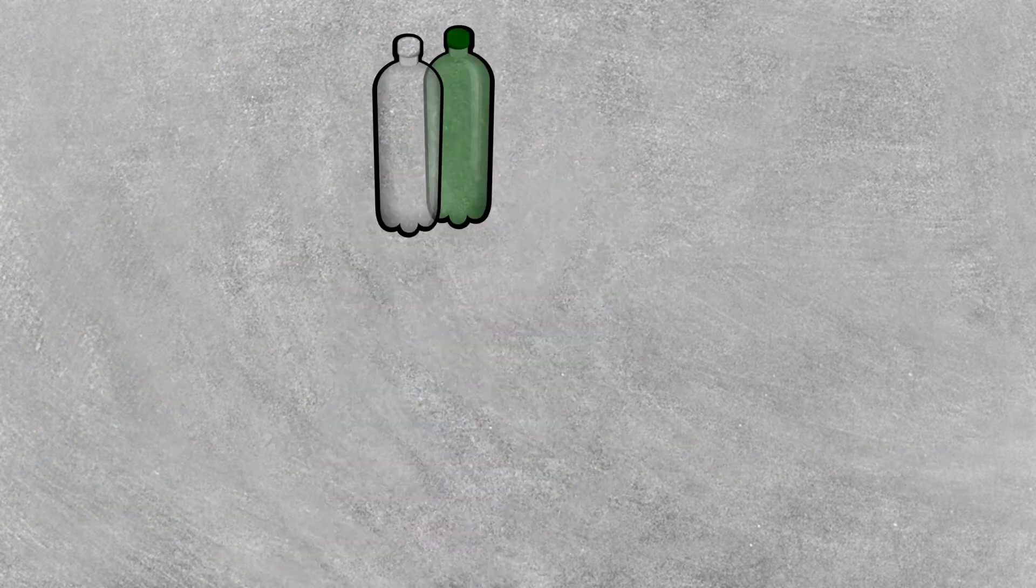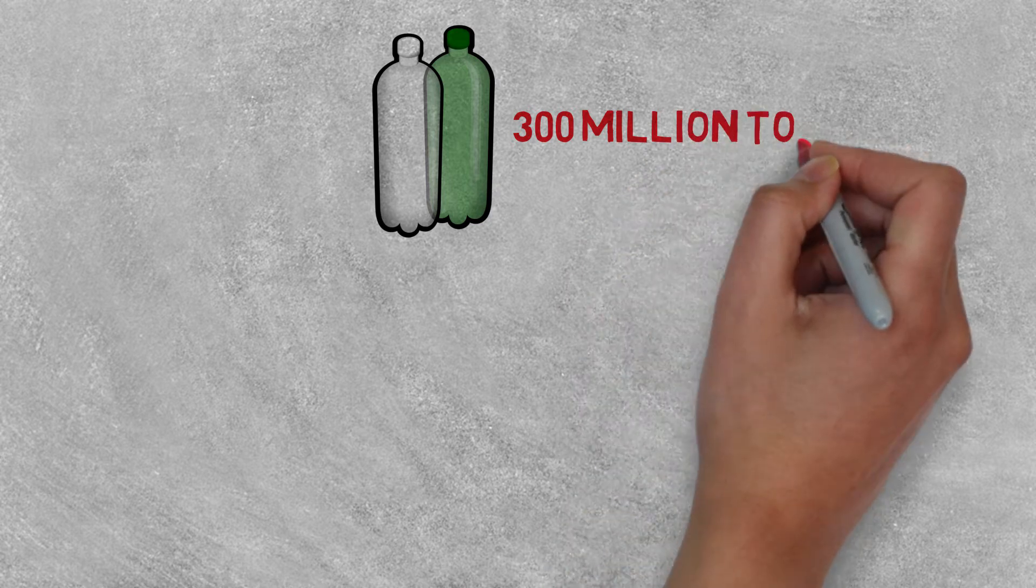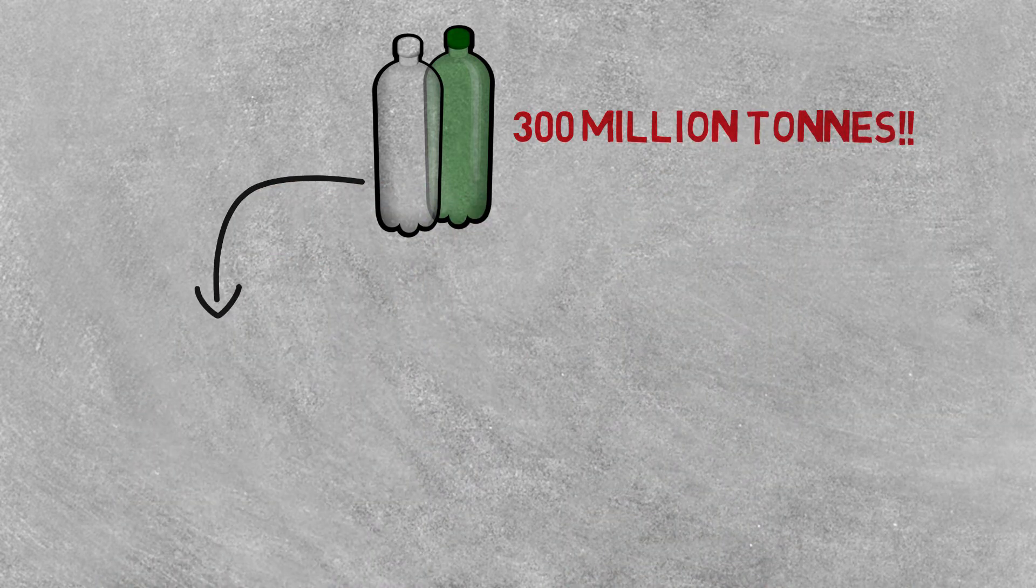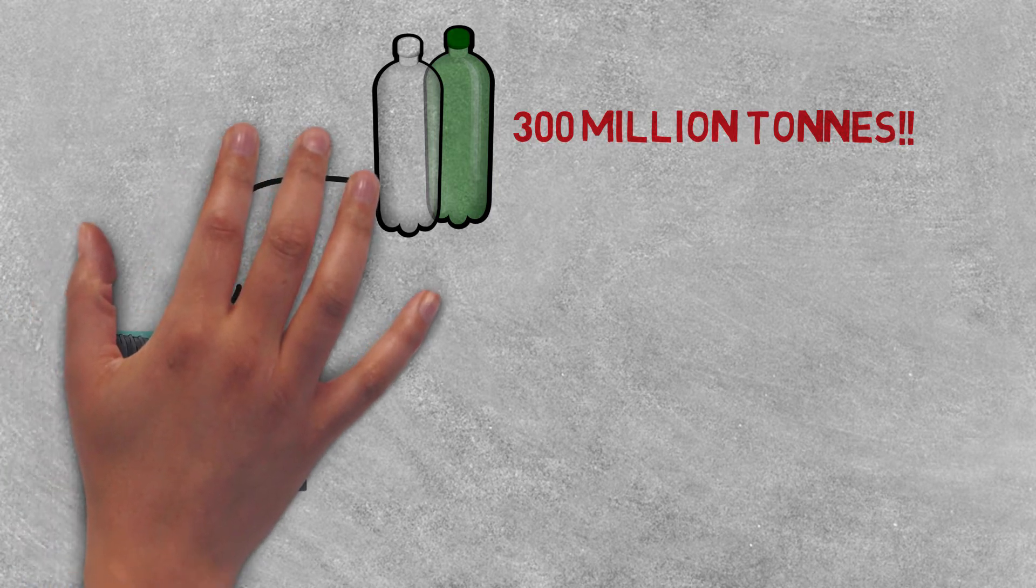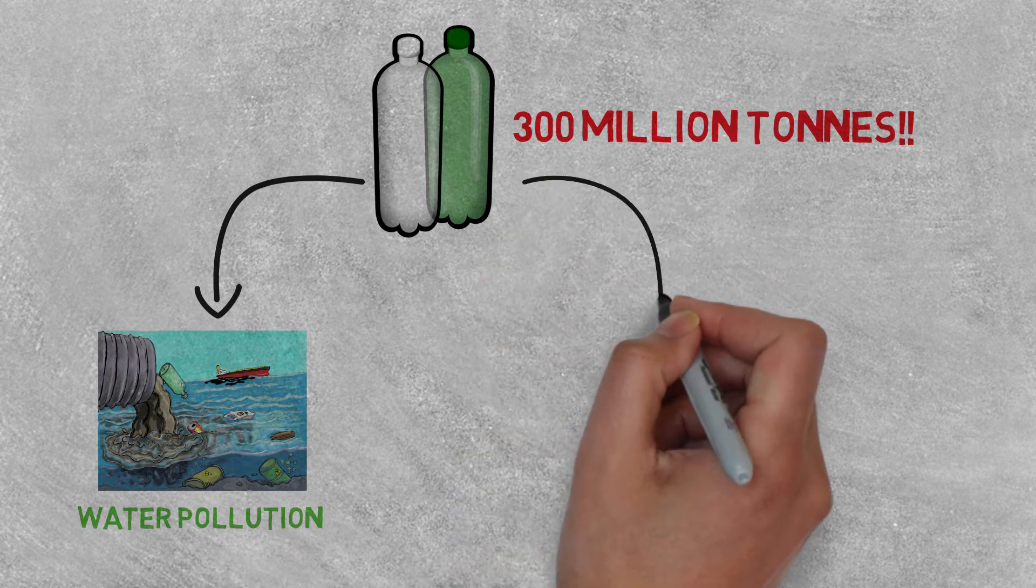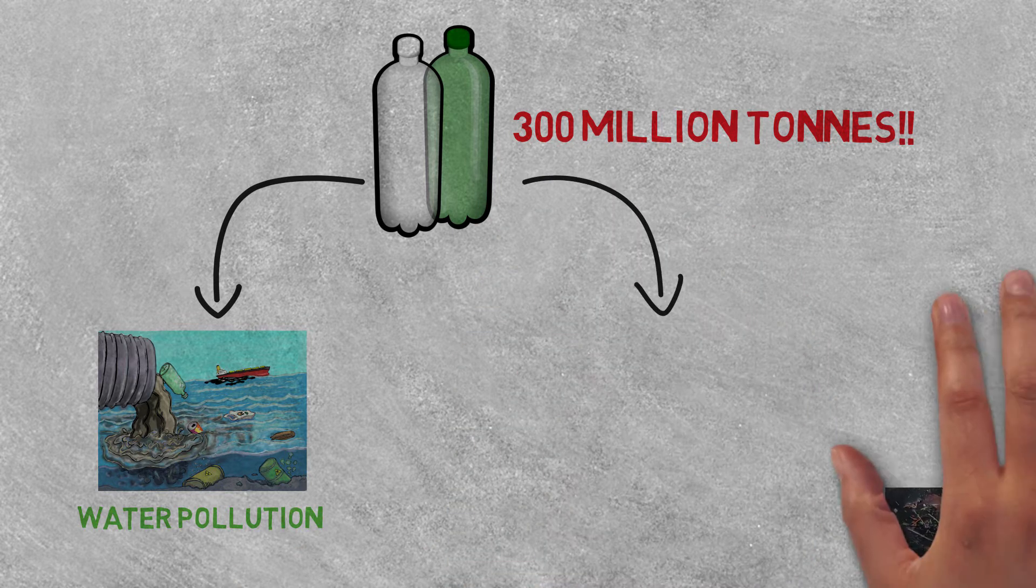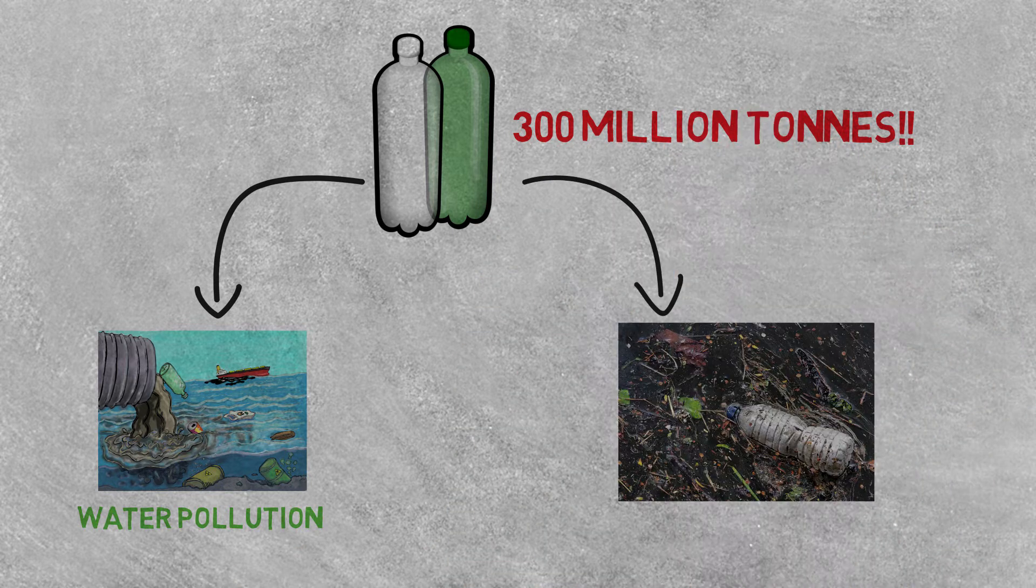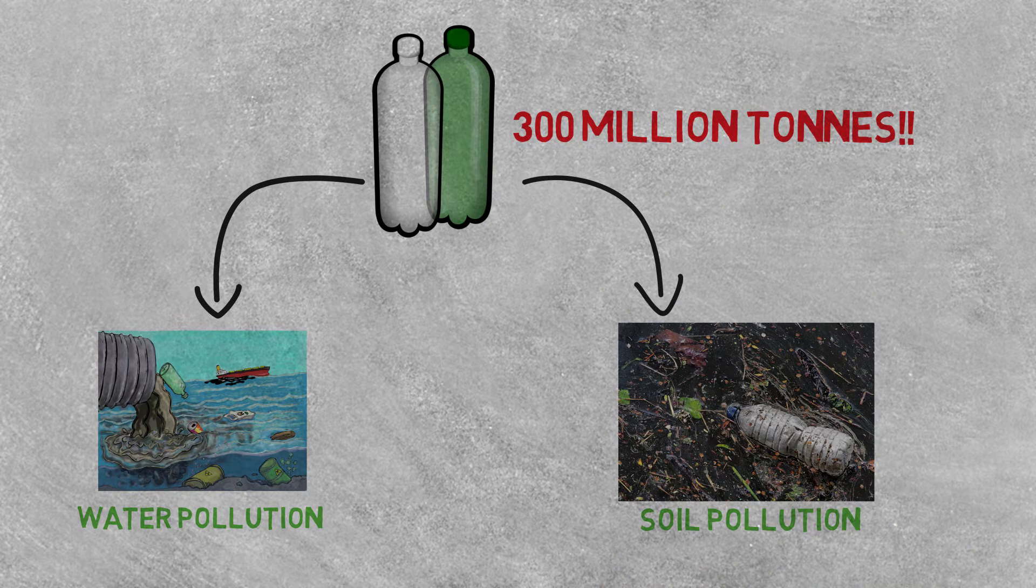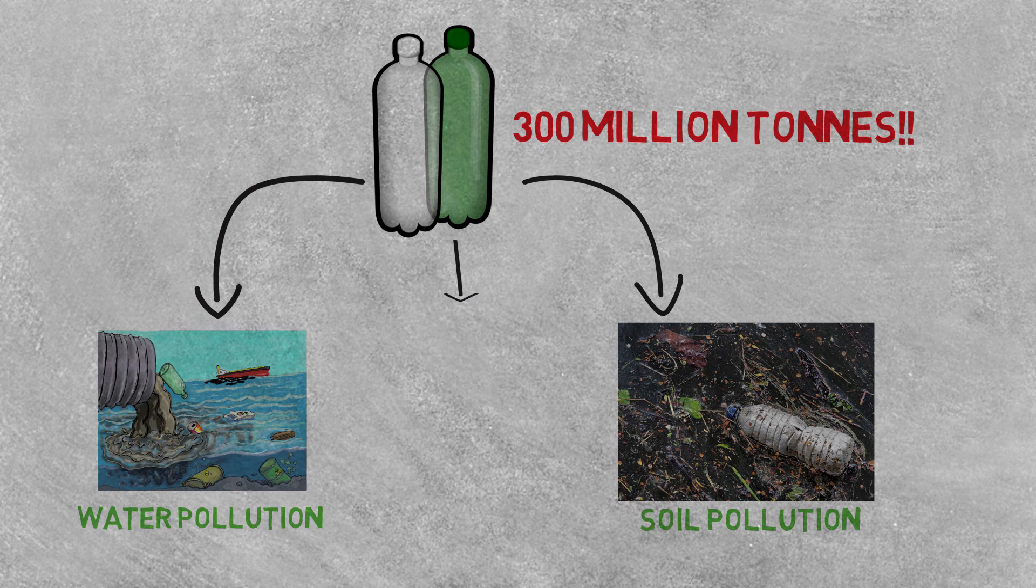Every day, almost 300 million tons of plastic bottles are produced and when we throw them, they create water pollution and soil pollution. And by use of this water and soil, it creates cancer.